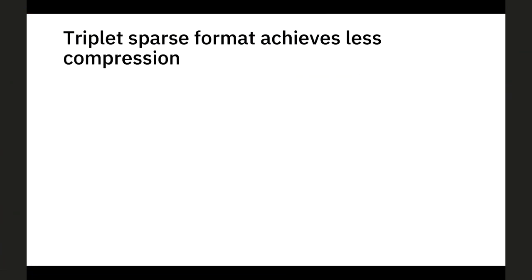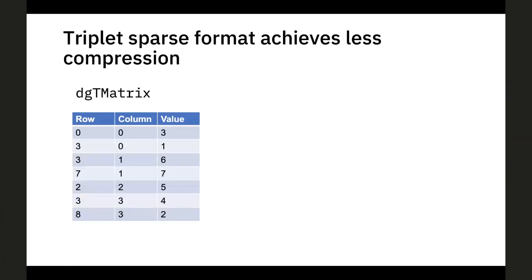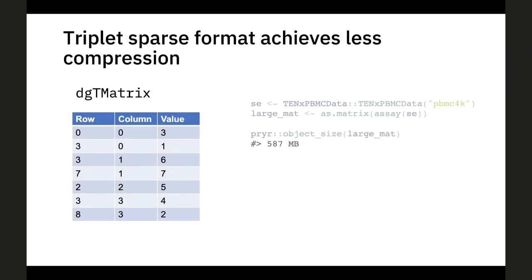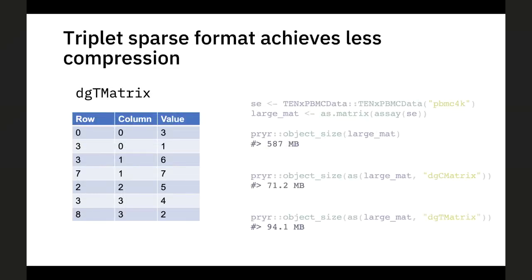You might wonder why do something so complicated, rather than a triplet sparse matrix where you simply store for each value the row and the column index — which is much easier to think about. The reason we don't use triplet format is that the DGC format is more efficient and condensed. Here's also the answer to the earlier question: the PBMC 4K dataset is nearly 600 megabytes as a dense matrix, versus 76 MB for the DGC sparse version. That's why it's the dominant object type for storing sparse data — people don't want to waste the additional ~20% storage just for a slightly more intuitive internal format.